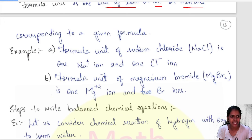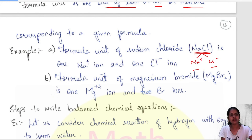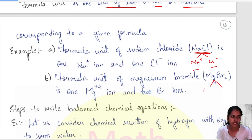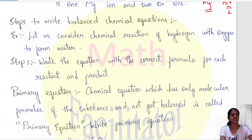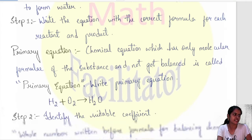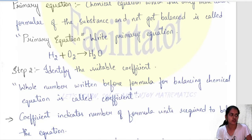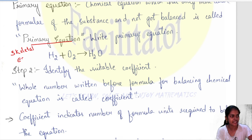Balancing chemical equations involves finding out how many formula units of each substance take part in the reaction. A formula unit is a unit of atom or ion or molecule corresponding to a given formula. For example, NaCl splits into ions Na⁺ and Cl⁻ — those are the formula units. MgBr₂: magnesium valence is +2 and bromine is −1, so 1 magnesium reacts with 2 bromines. The equation which is not yet balanced is called a primary or skeletal equation.